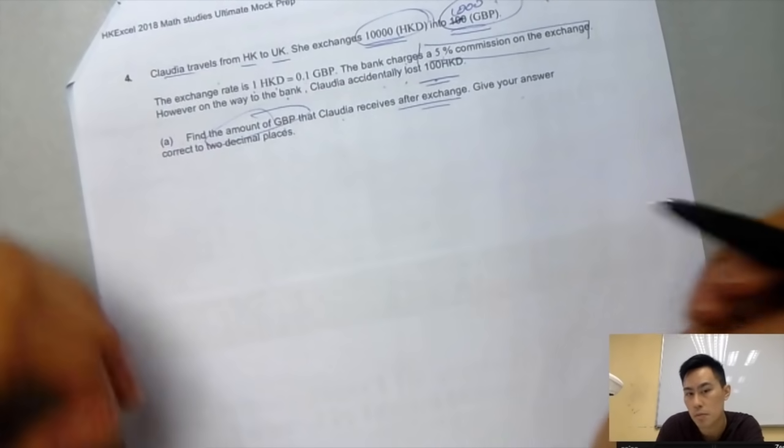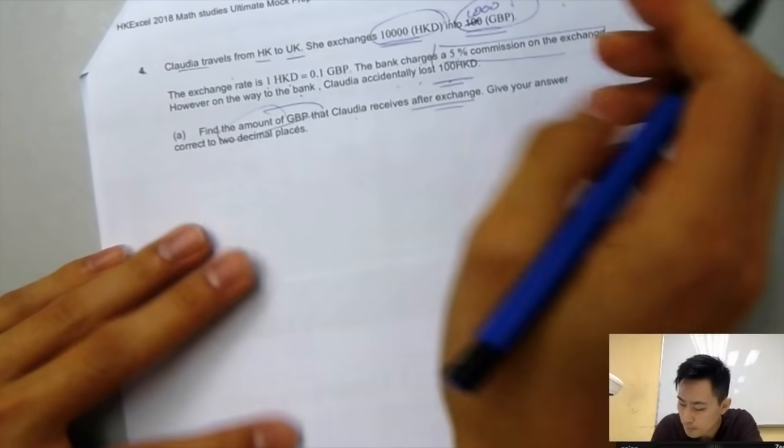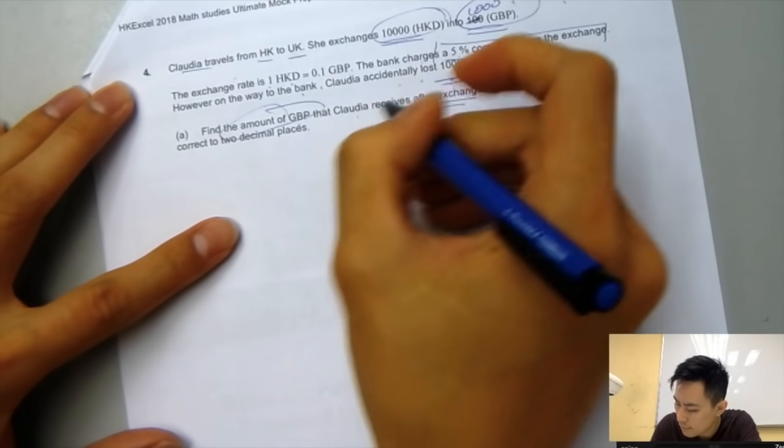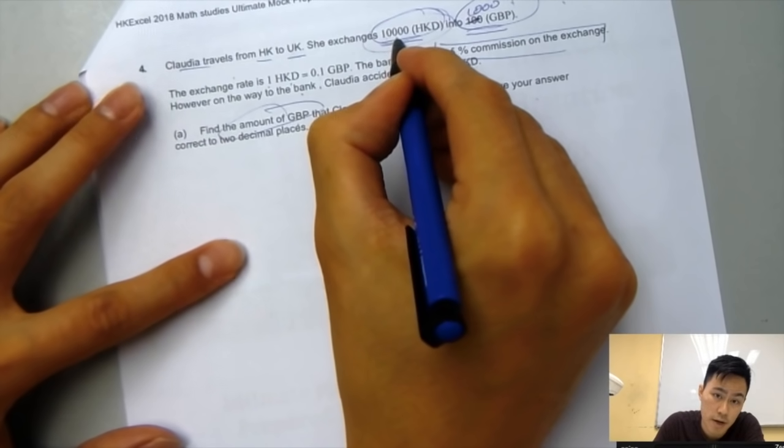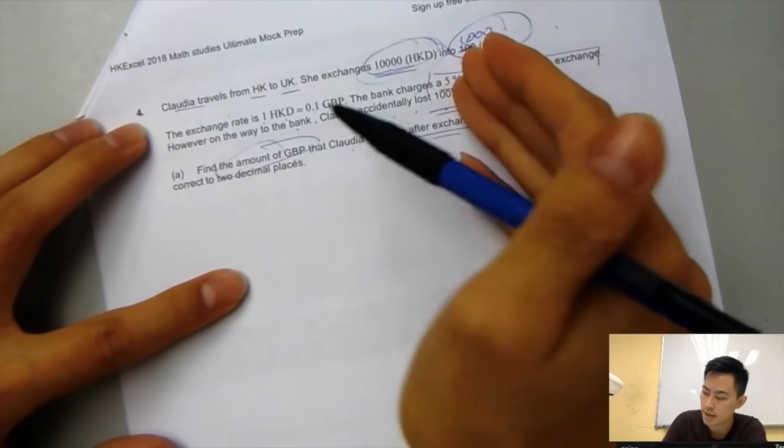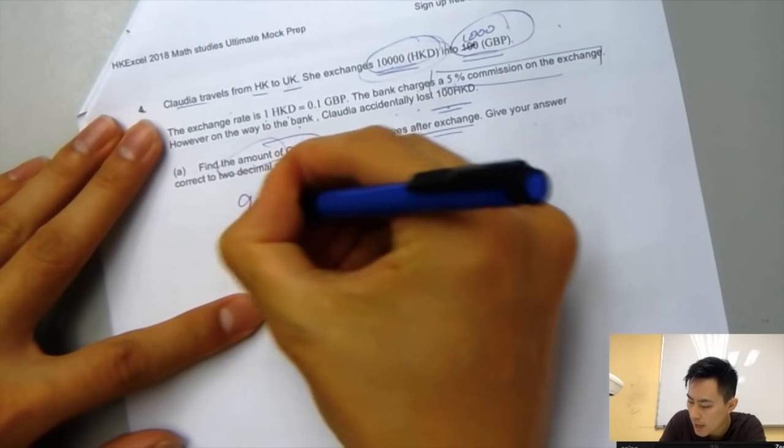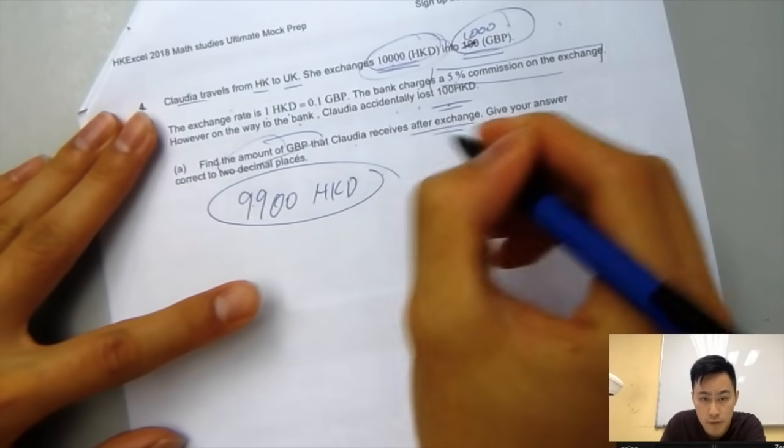How do you find the amount of pounds that Claudia received after exchange? Give your answer to 2 decimal places. You need to know that first, she's bringing 10,000 dollars, but how much left when she gets to the bank? Because she lost 100 dollars. That would be 9,900 Hong Kong dollars. That's the first thing you need to figure out.